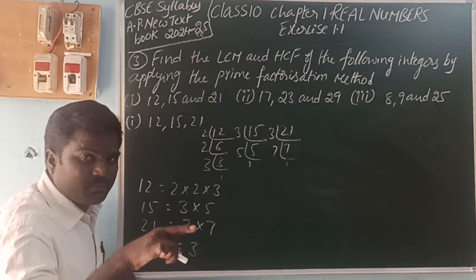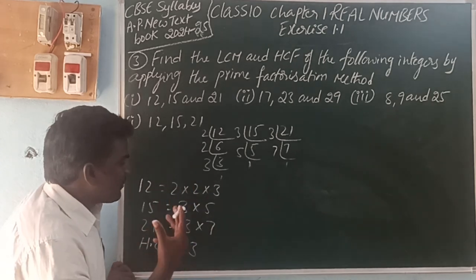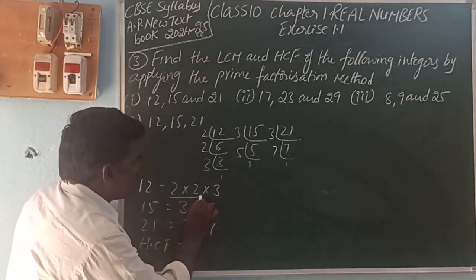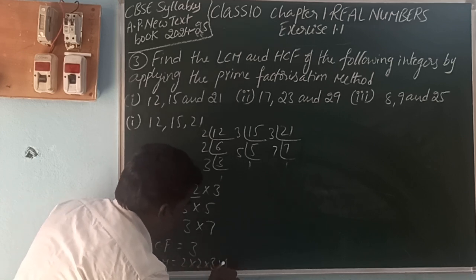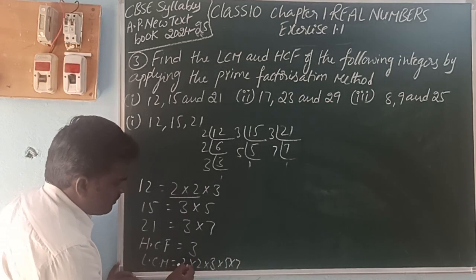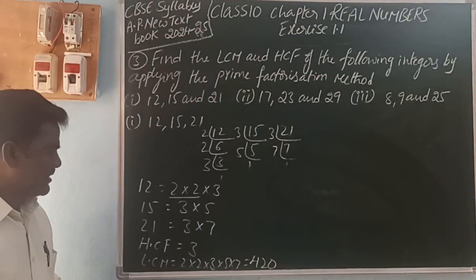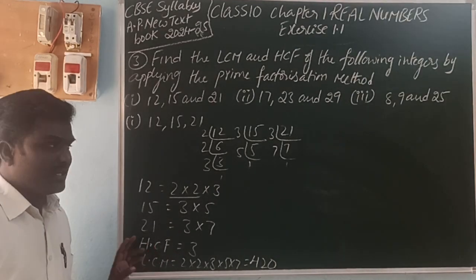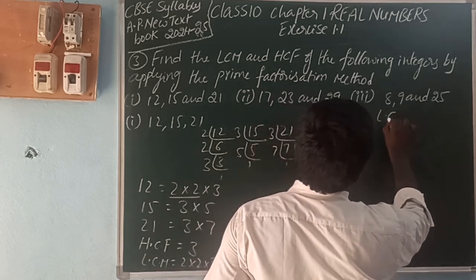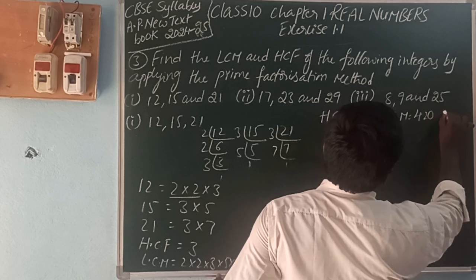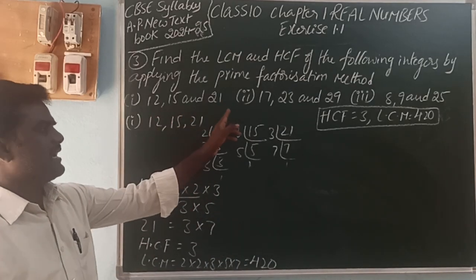For LCM, we take the highest multiple of all prime factors. The prime factors are 2, 3, 5, and 7. The factor 2 appears at most 2 times. So LCM = 2 into 2 into 3 into 5 into 7 = 4 into 3 into 5 into 7 = 420. So LCM is 420 and HCF is 3 for the numbers 12, 15, and 21.